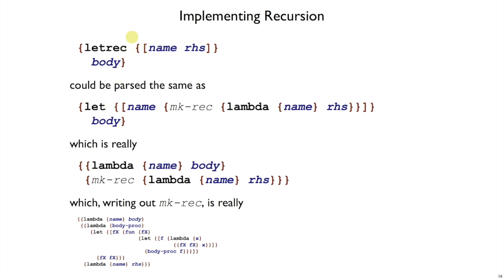So the parser could pull out the name, the right-hand side, and the body, and re-put it together into this big giant term, with the name used a couple of times, the body used once, and the right-hand side used once.